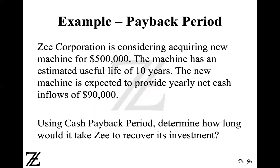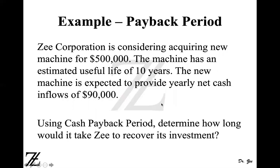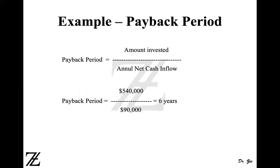Here is an example of simple payback period with an annuity. Z Corporation is considering acquiring a new machine for $500,000 — that's your investment. The machine has an estimated useful life of 10 years, and is expected to provide a yearly net cash inflow of $90,000. Since cash receipts are equal each year, we use the formula: Investment divided by Annual Net Cash Inflow. So $540,000 divided by $90,000 gives us 6 years. It will take six years to recover this investment.